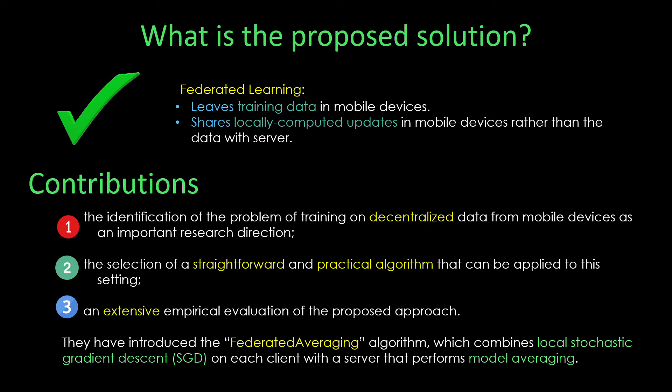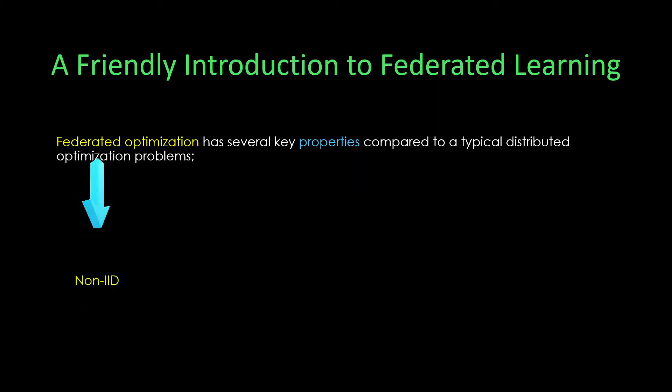Federated optimization has several key properties compared to typical distributed optimization problems. The first property is non-IID dataset, meaning local datasets do not fully represent the whole dataset. The second property is unbalanced dataset, meaning some mobile devices make heavier use than others, leading to unbalanced data.